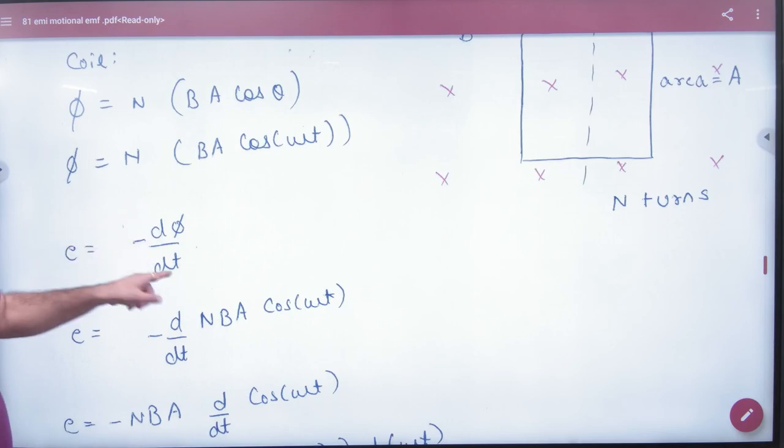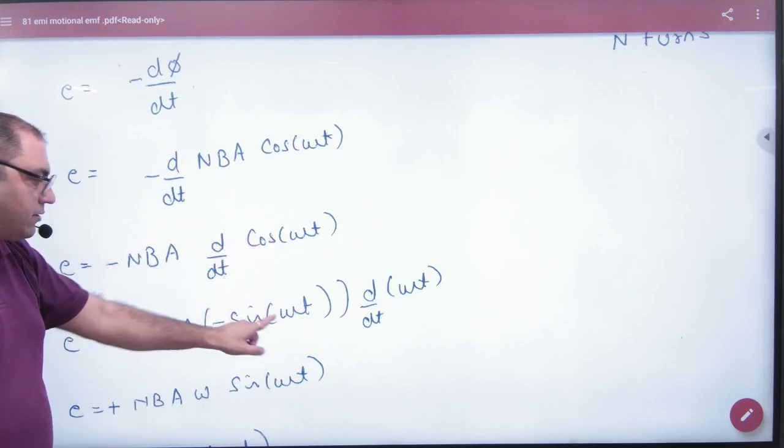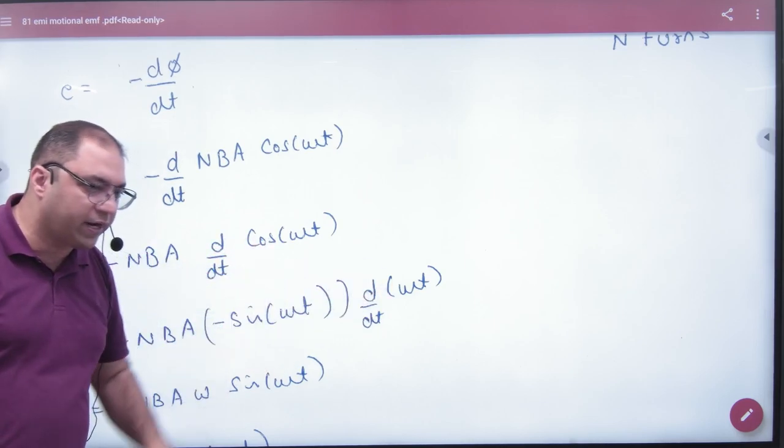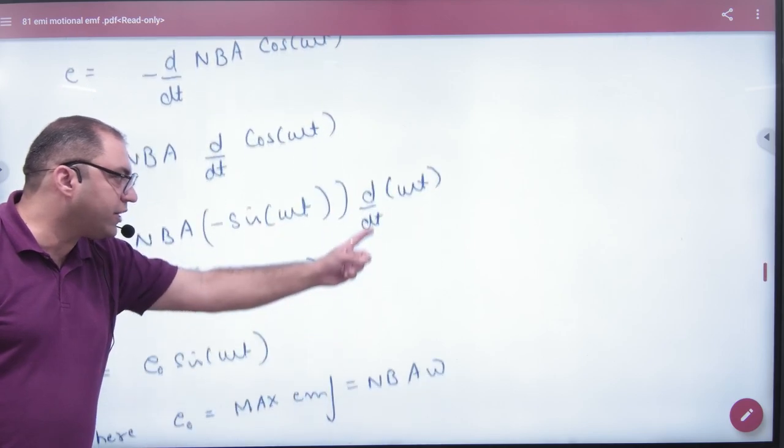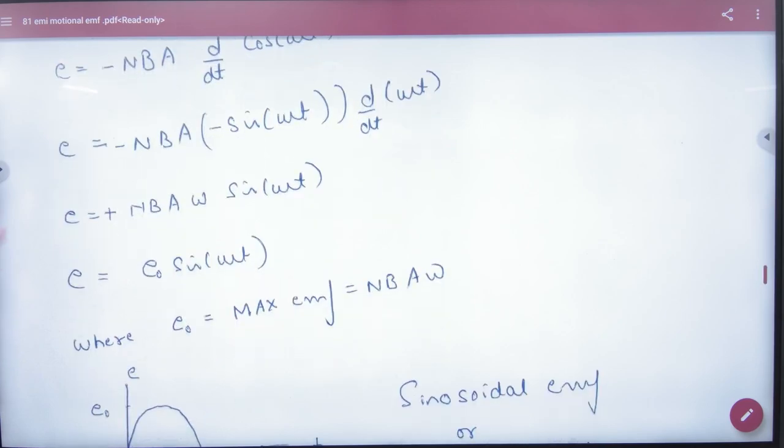So EMF will be minus d phi by dt. Where we put value in phi, NBA common a gaya. Cos ke differentiation minus sin omega t into d by dt of omega t. Omega yaha se constant a gaya dt by dt 1. Minus minus plus ho gaya. Ye term a gai.